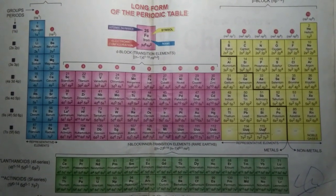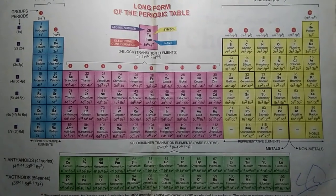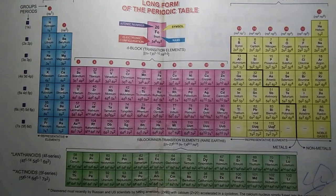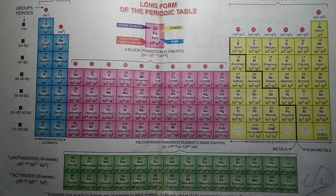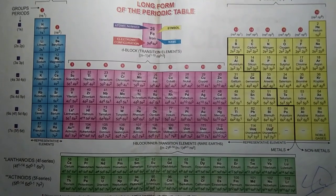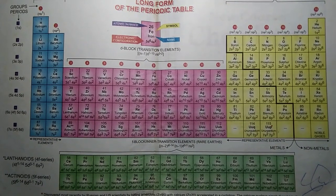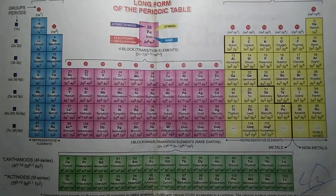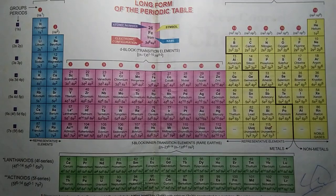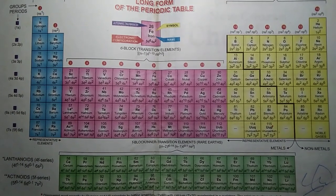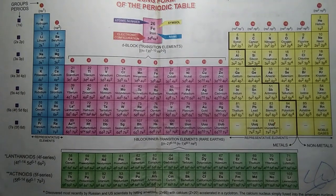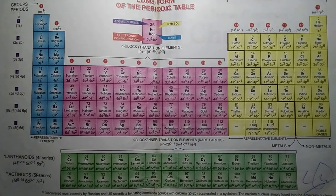You should know that hydrogen is not included in this group as it is not an alkali metal. So you can learn the rest easily with the mnemonic: 'lena ne ki rab se fariyad' — lena for lithium, ne for sodium, ki for potassium, rab for rubidium, se for cesium, and fariyad for francium.